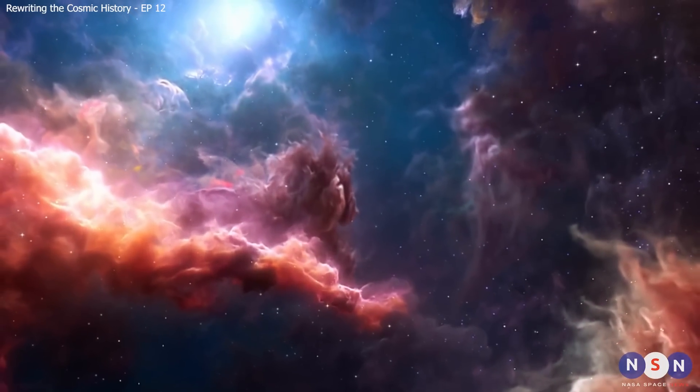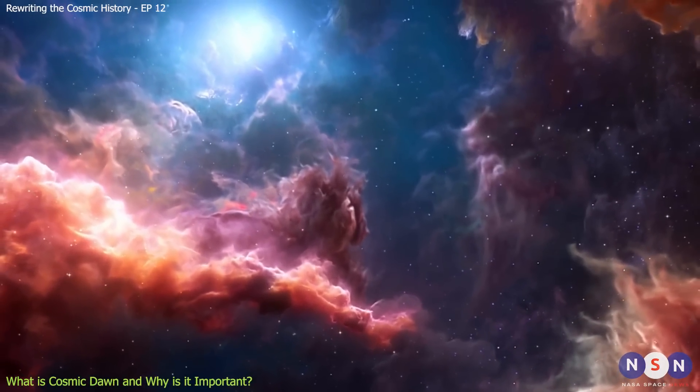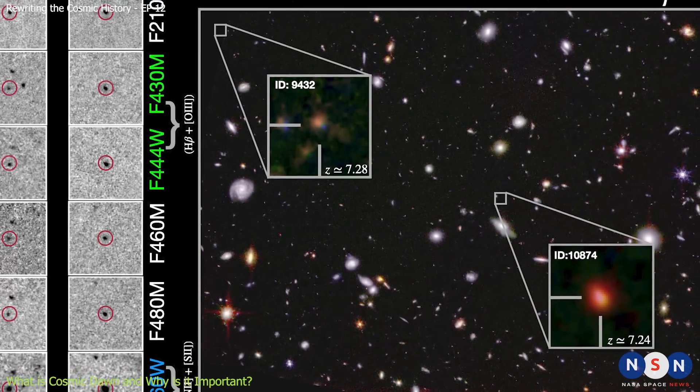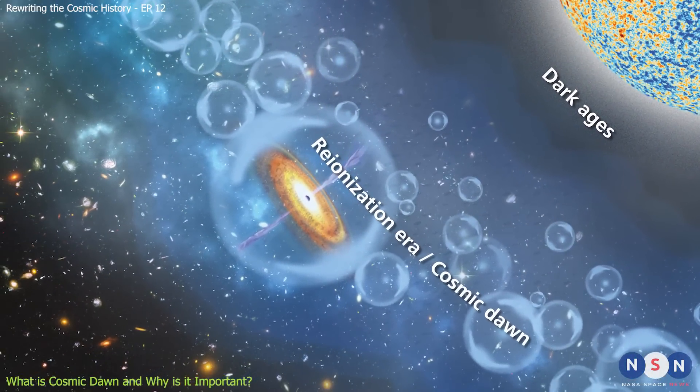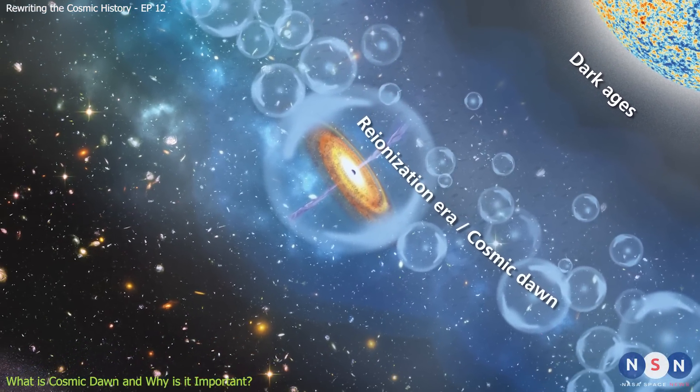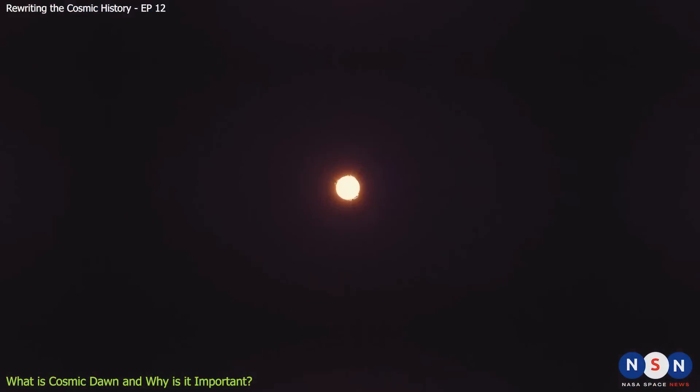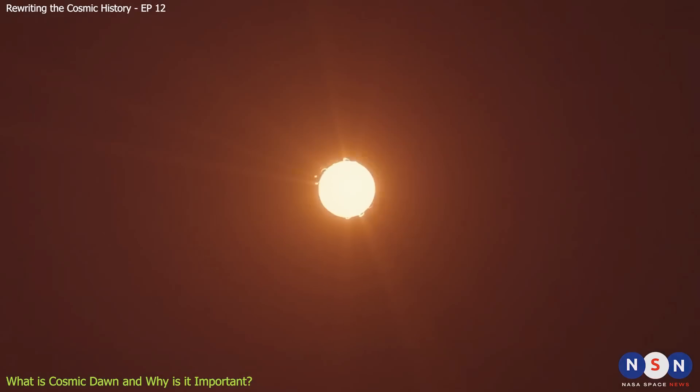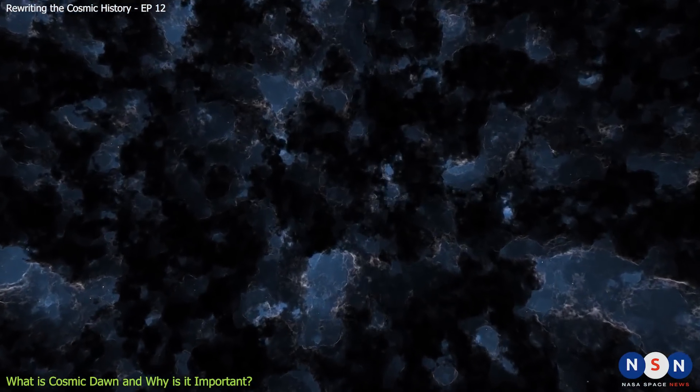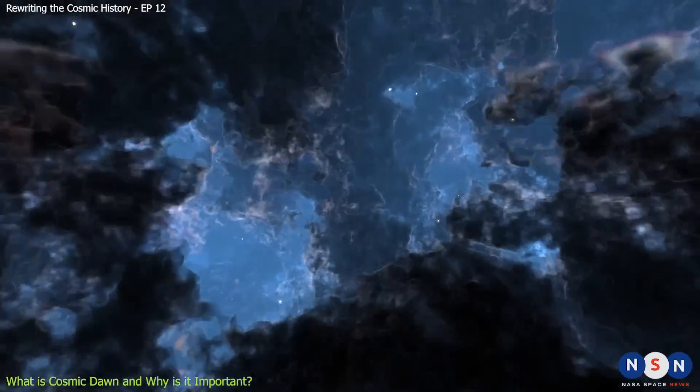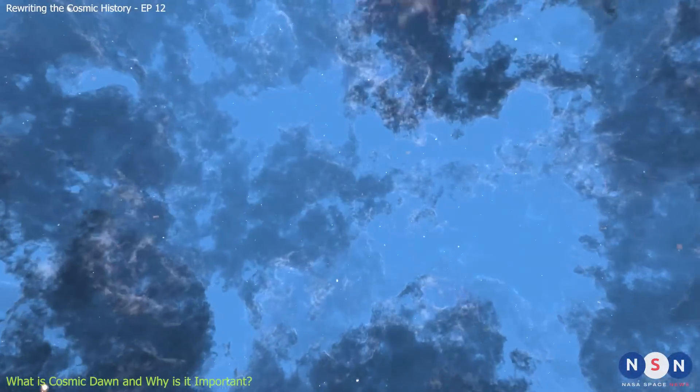Before we dive into the discovery, let's talk about what Cosmic Dawn and Star Formation are. These are two things that will help us understand why this discovery is so amazing. Cosmic Dawn is a time in the history of the universe when the first stars and galaxies were born. It happened from about 150 million to 1 billion years after the Big Bang. It is also called Epoch of Reionization, because it changed the universe from dark and neutral to bright and ionized.